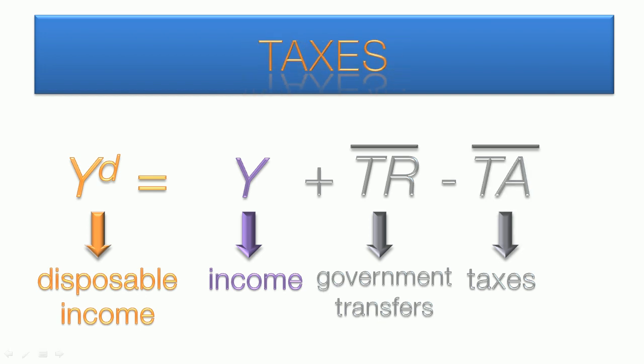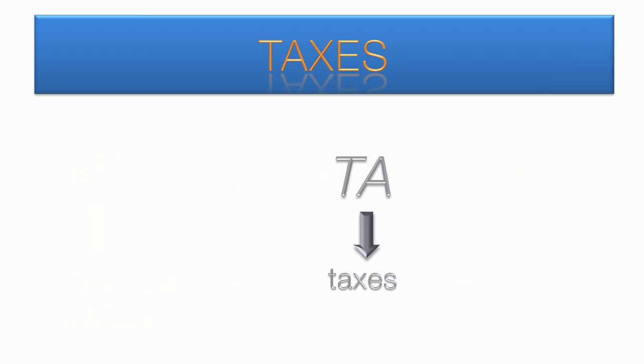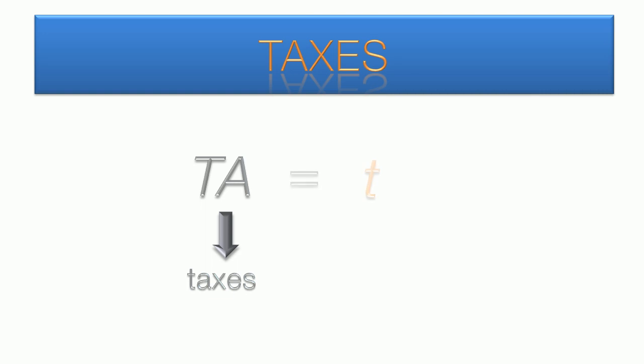Generally, income taxes are some percentage of income. Although it's not that simple in practice, in this model we're going to think of taxes as a flat rate, denoted by the lower case t. This coefficient could be any number between 0, meaning no taxes, and 1, meaning all income would be paid in taxes. This is then multiplied by income.